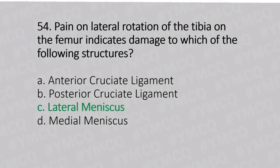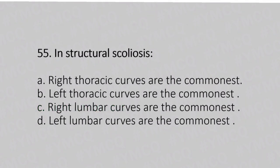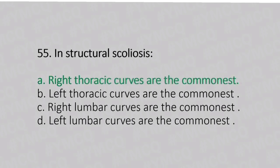Now let's move to question number 55. In idiopathic scoliosis. Option A: right thoracic curvature is the commonest. Option B: left thoracic curvature is the commonest. Option C: right lumbar curvature is the commonest. Option D: left lumbar curvature is the commonest. And the answer is Option A, right thoracic curvature is the commonest.